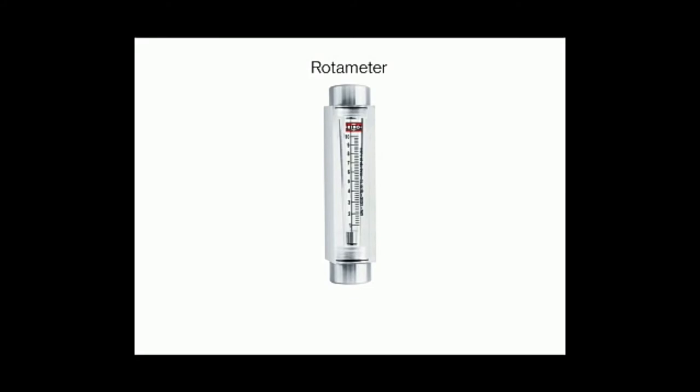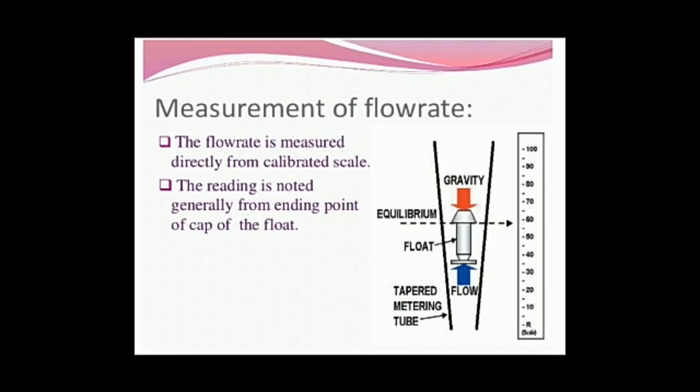The principle of rotameter is that it is a variable area flow meter used to measure fluid flow. It works on the principle of upthrust force exerted by the fluid or the force of gravity. The buoyant force exerted on an immersed object is equal to the weight displaced by the object. This is the diagram which shows how the rotameter works.